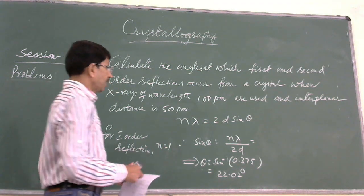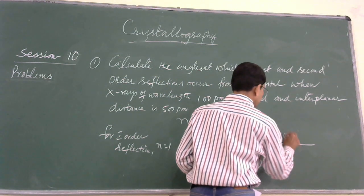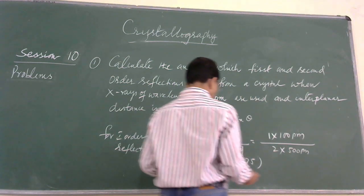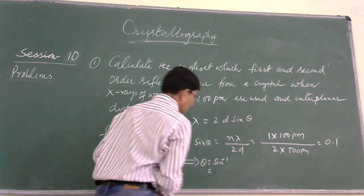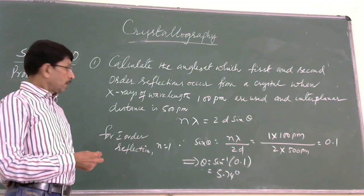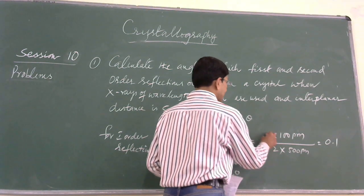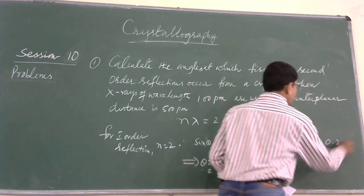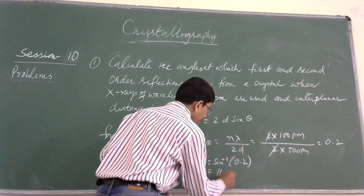Again, since we need to calculate theta, we consider Bragg's equation. For first order reflection, sine theta equals N lambda over 2D. So N is 1, lambda is 100 picometers, divided by 2 times 500 picometers. If we simplify this, 100 divided by 1000 is 0.1. So theta is sine inverse 0.1, which comes to 5.74 degrees. Similarly, by changing the values, we can calculate theta for second order reflection. Now 200 divided by 1000 becomes 0.2, so sine inverse 0.2 comes to 11.54 degrees.